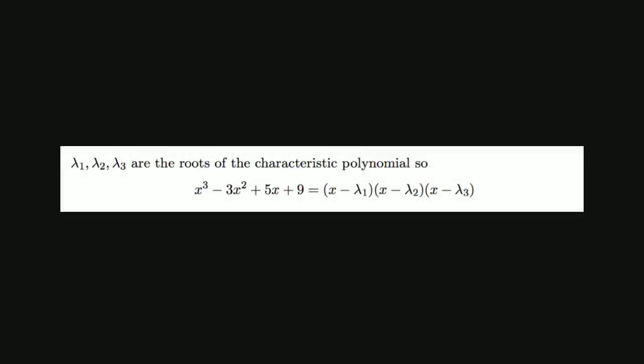To see how to do this, first recognize that the eigenvalues are the roots of the characteristic polynomial. So the polynomial x cubed minus 3x squared plus 5x plus 9 factors into x minus lambda 1, x minus lambda 2, and x minus lambda 3.